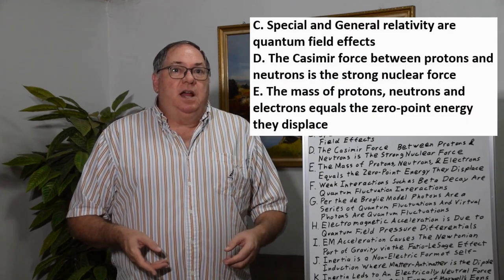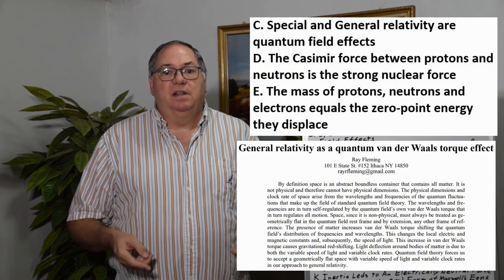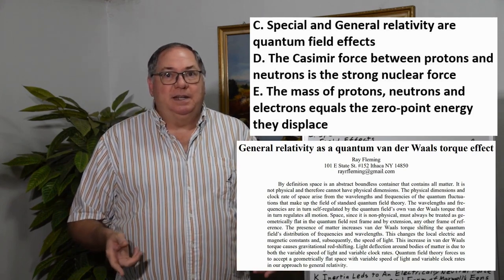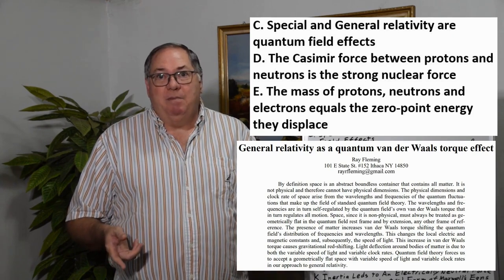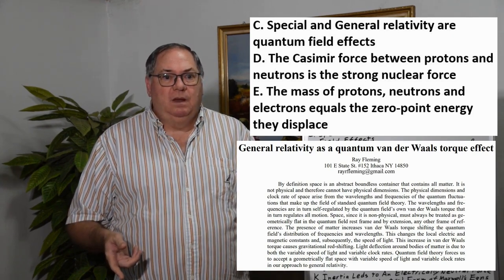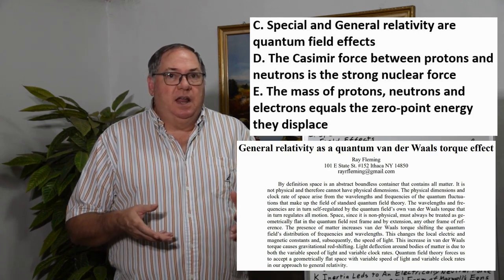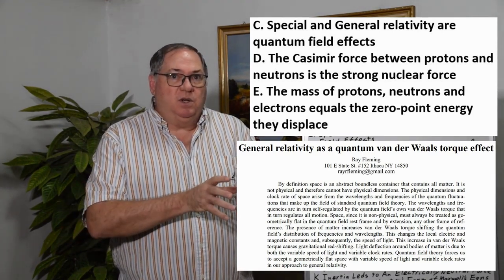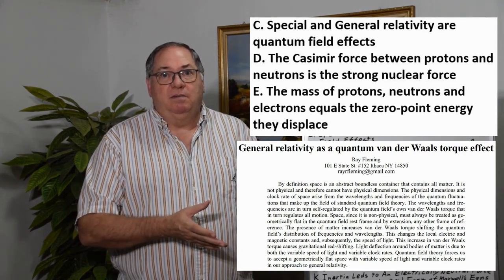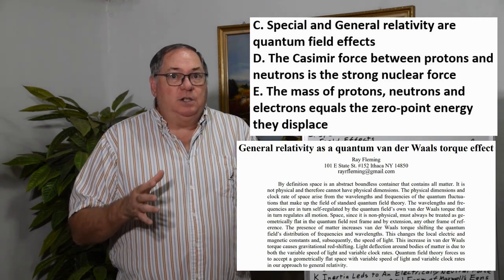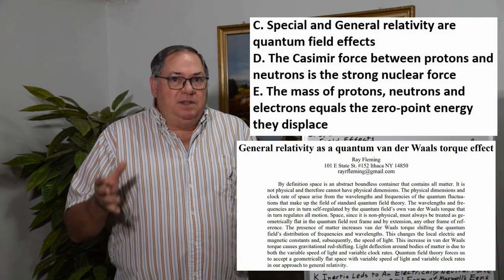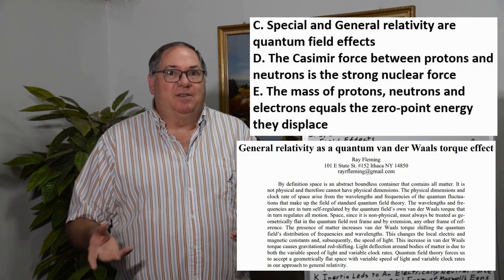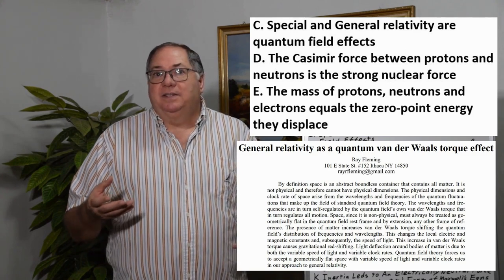Because dimensions and clock rates come from the quantum field, special and general relativity are quantum field effects. When a body is moving relative to the quantum field rest frame, the Van der Waals torque increases, which slows clock rates and shortens wavelengths. With a large body like our sun, in the vicinity of it, you get an increased torque which shortens wavelengths and frequencies, slowing clock rates. You get things like the Shapiro delay, which is an actual time delay due to the slowing of light.